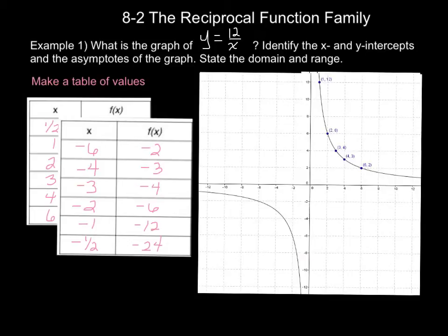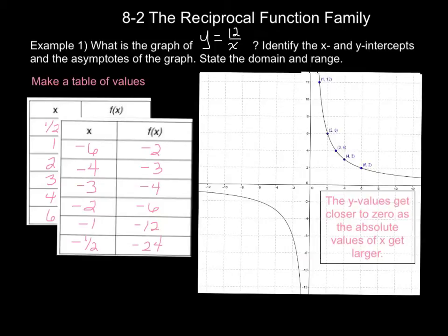Now we need to find the x and y intercepts of the graph, as well as the asymptotes of the graph. You may notice that the y values get closer to zero as the absolute values of x get larger. This means we have a horizontal asymptote, or boundary line, at our x axis. Because we have this asymptote at our x axis, it also means that we have no x intercept.